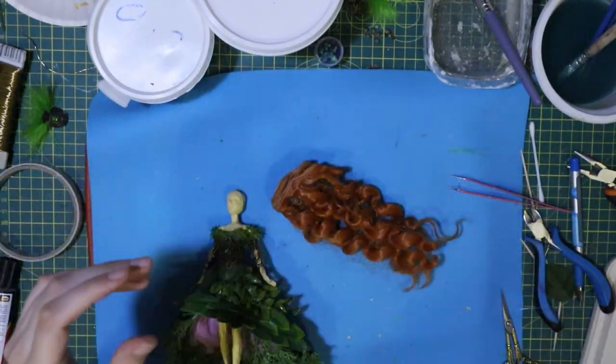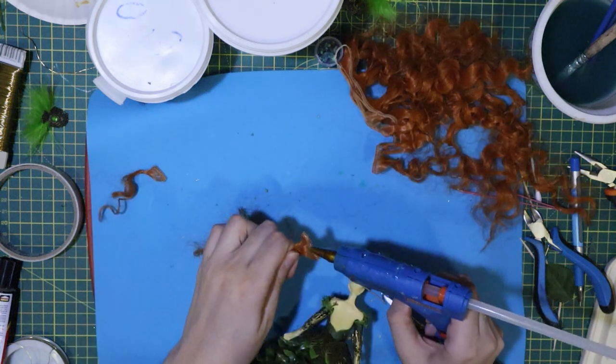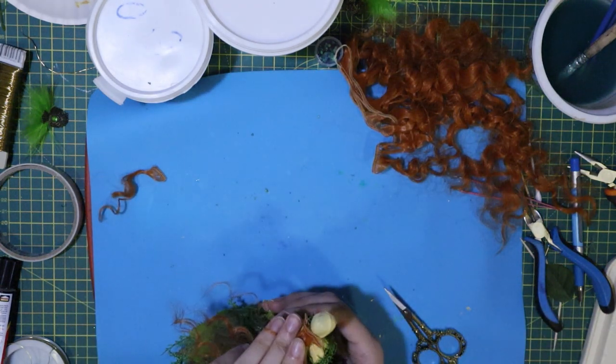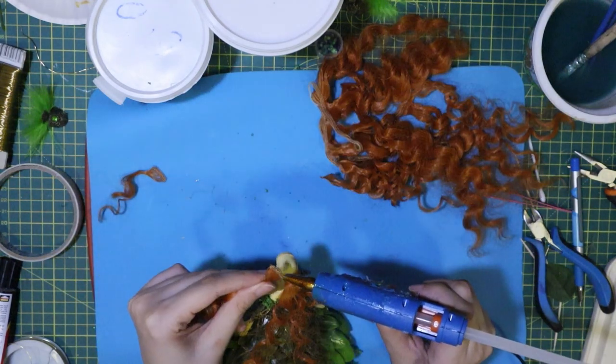Since our fairy's dress is going to be green, I thought that ginger hair would look the best on her. I simply glue them on in rows and then I add her crown.